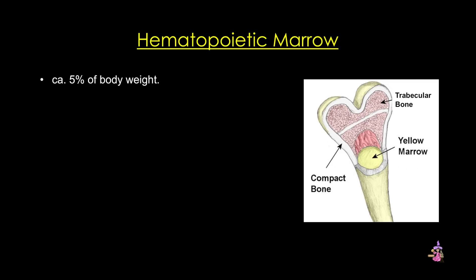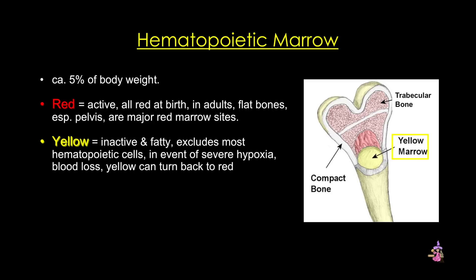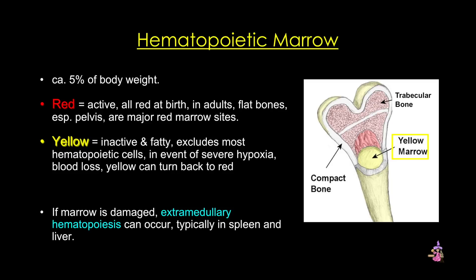Now we've covered some basics about how hematopoiesis occurs, and we'll discuss specific lineages in a different tutorial. For now, let's talk about the adult stem cell niche — the bone marrow. Under normal conditions, bone marrow adjusts production of blood cells in response to the body's needs relatively quickly. There are two types of marrow based on gross examination. Red marrow is blood-forming marrow — red due to the abundance of blood and hematopoietic stem cells. At birth, all marrow is red, but as we age, most changes to yellow marrow, which is inactive and filled with adipocytes that crowd out most hematopoietic stem cells. Interestingly, yellow marrow can become active during extreme stresses such as hypoxia or major blood loss. The liver and spleen can also serve as sites of extramedullary hematopoiesis when the bone marrow is not functioning due to pathology.